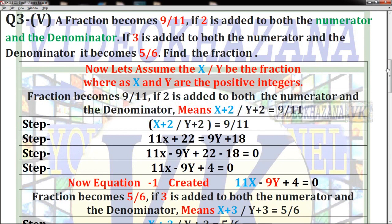Do you understand the language of this question? Now let's assume x/y be the fraction, where x and y are positive integers. The fraction becomes 9/11 if 2 is added to both numerator and denominator.